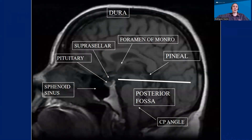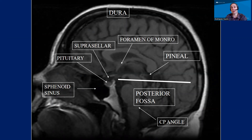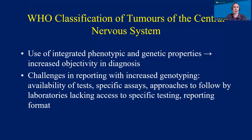When we receive a specimen in neuropathology, we need to put it in context of the clinical information we receive from radiology and from our oncologists and surgeons, because different areas of the CNS have a different spectrum of neoplasms and lesions, and it helps us a lot diagnostically. The WHO classification of tumors is the standard that we use for making a diagnosis of tumors on the pathologic level.